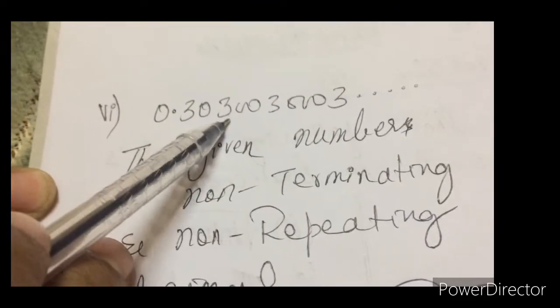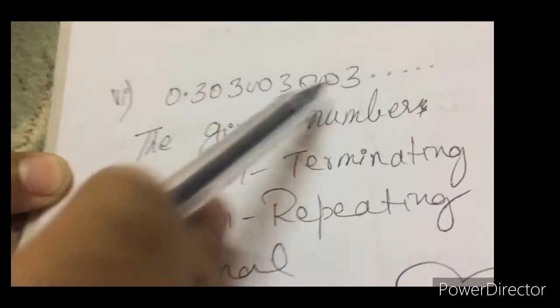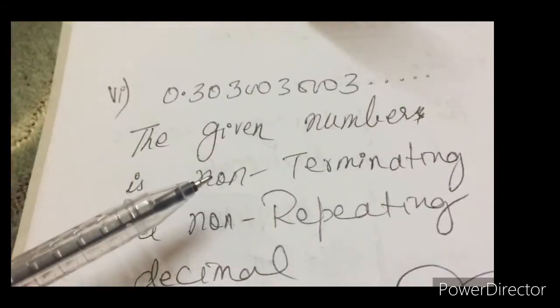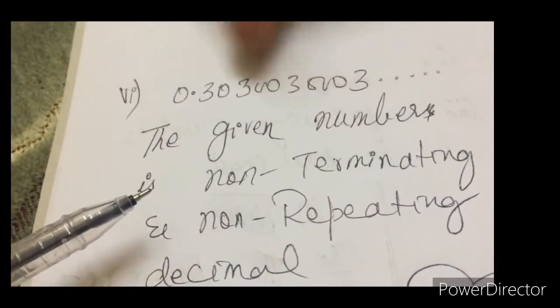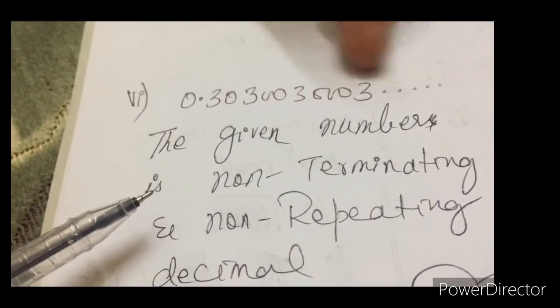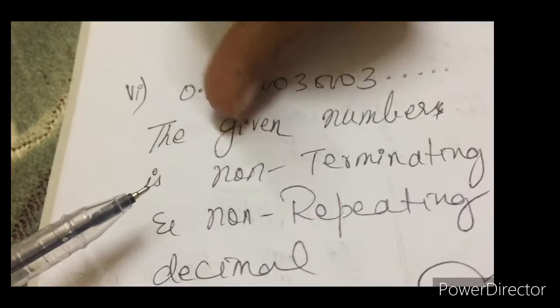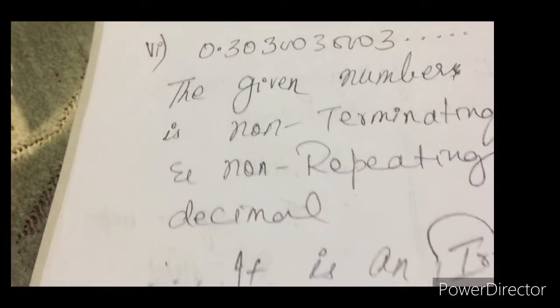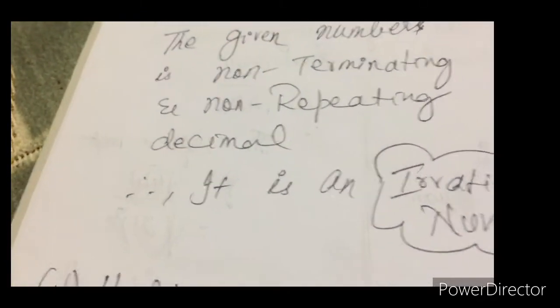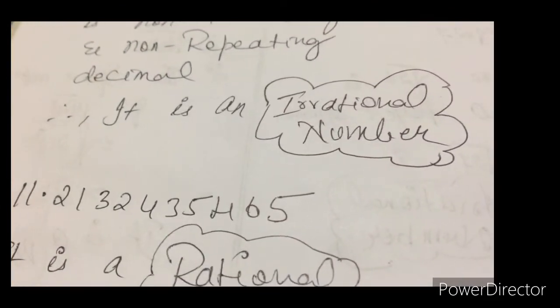See here, 0.3 0 3 0 0 3 0 0 0 3. One time zero, two time zero, three time zero, then four time, then five time, so on. The pattern is what? It is non-repeating. It is always changing. Then given number is non-terminating and non-repeating decimal. Therefore it is an irrational number.